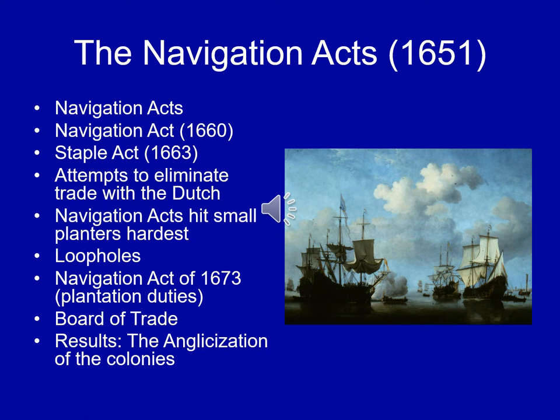These goods included tobacco and rice — the things produced in the colonies. These Navigation Acts were attempts to eliminate trade with the Dutch. The Staple Act of 1663 expanded the Navigation Acts, and the new taxes hit small planters in the Chesapeake the hardest. But there were loopholes: although you had to sail your goods to England, you did not have to pay English taxes on them unless you sold them there. So American ships would often make for the Caribbean and sell their goods there tax-free.